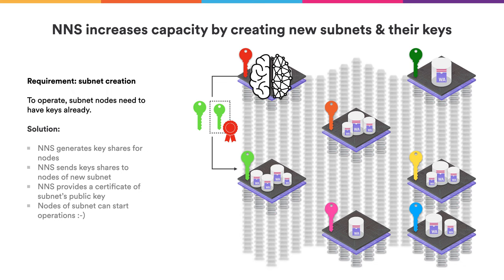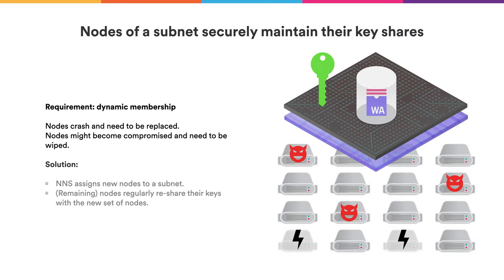We use something called a Threshold Signature Scheme, which consists of several algorithms. First, a key generation algorithm where a dealer generates the public key and key shares for the parties — in our case the nodes of a subnet. Then a signing algorithm where individual nodes use their secret key share to produce a partial signature on a message. Once sufficiently many parties have produced partial signatures, those can be combined into an overall signature. That combined signature can then be verified against the public key that was generated originally.